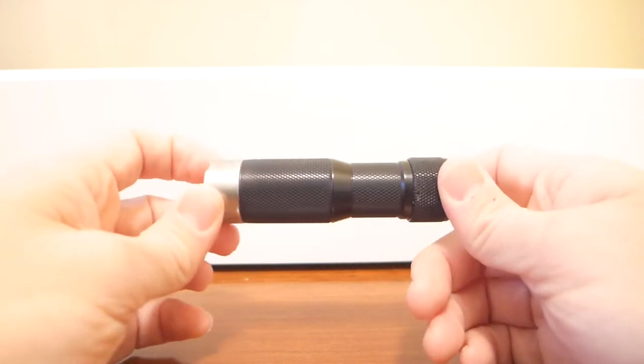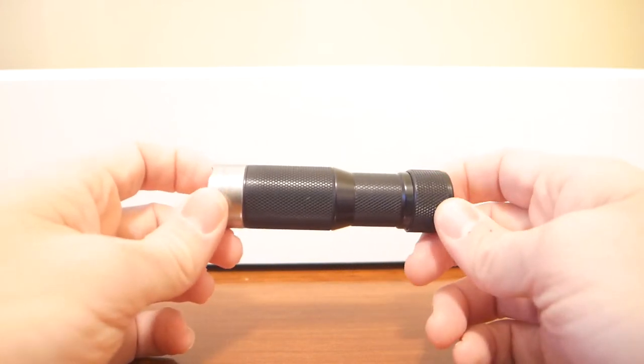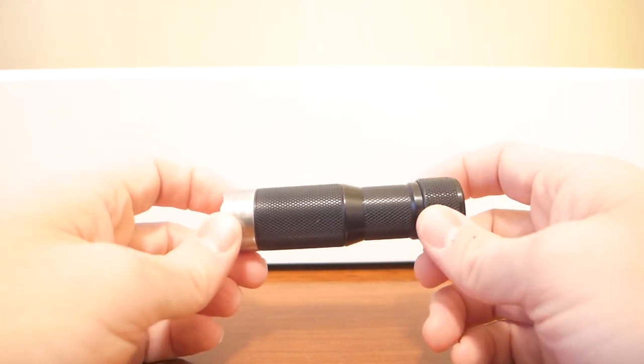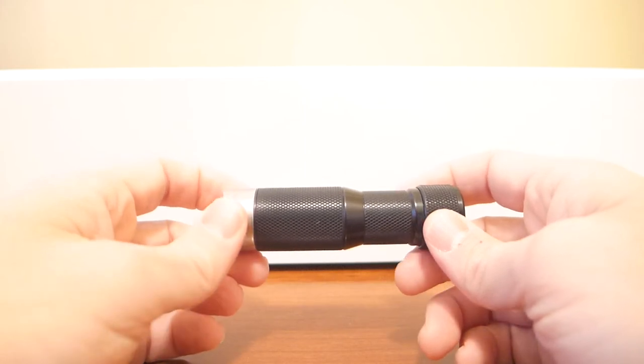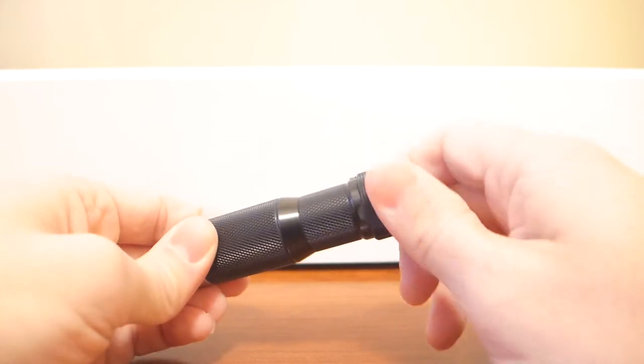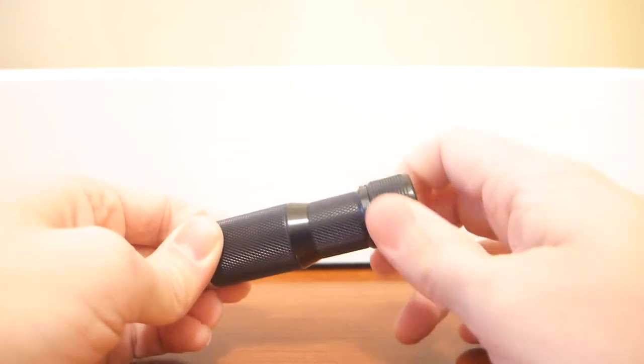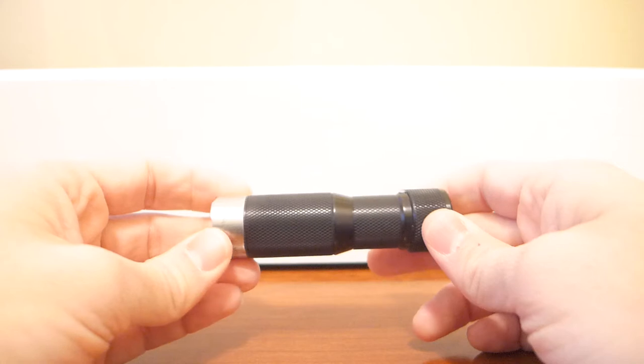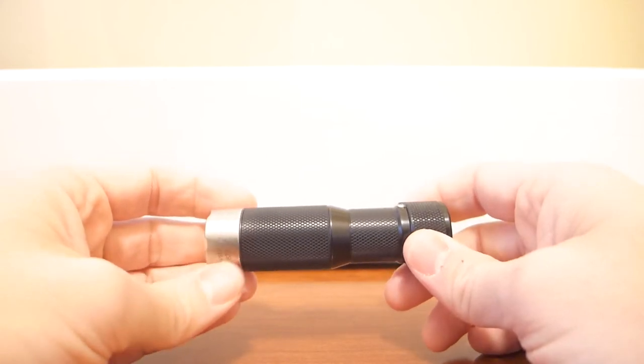So the light, the body of the light is a relatively old design, but the thing that makes this light so unique and so new, relatively new, it's about two years old, is this in the back, the tail cap. So the tail cap in the HDS Rotary Executive 200 is what makes it what it is.